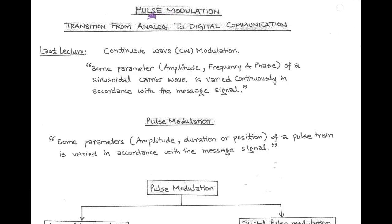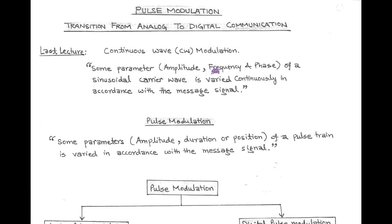Hello friends. Here we are going to discuss pulse modulation. Pulse modulation is the transition from analog communication to digital communication. In our last video lectures, we have talked about continuous wave modulation. In that, parameters like amplitude, frequency, and phase of the high frequency sinusoidal carrier wave are varied instantaneously according to the message signal. For example, amplitude modulation, phase modulation, and frequency modulation. But here, in this session, we discuss about pulse modulation.